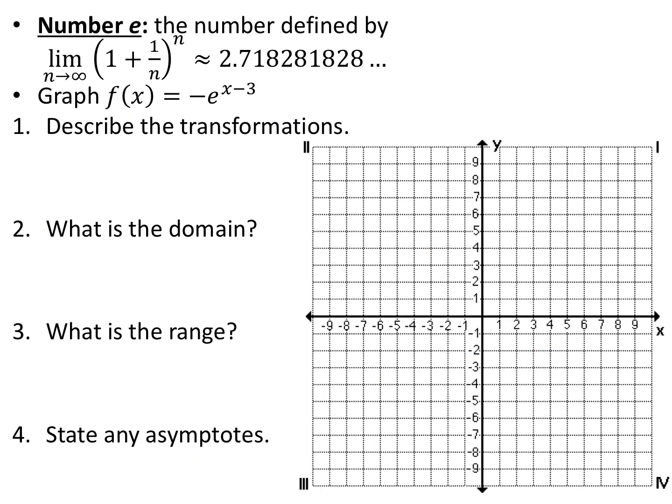We have a new constant called e. The number e is defined as the limit as n approaches infinity of 1 plus 1 over n to the n — don't worry too much about that formal definition. What you need to know is that it's an irrational constant similar to pi, approximately 2.71. From now on, whenever we see e, we mean the natural number e.